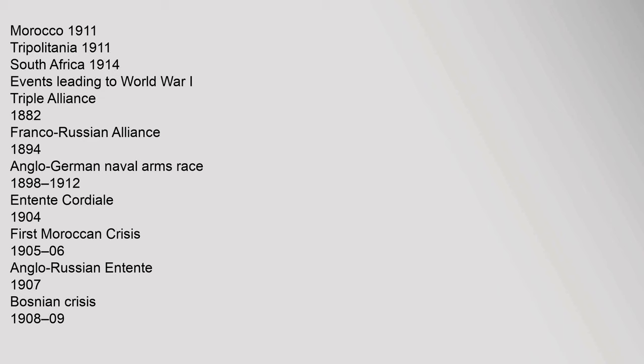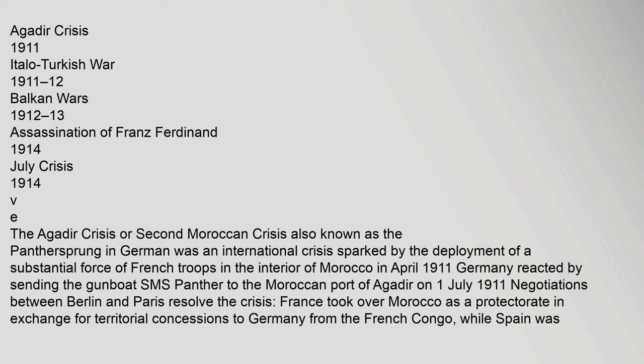Events leading to World War I: Morocco 1911, Tripolitania 1911, South Africa 1914. Triple Alliance 1882, Franco-Russian Alliance 1894, Anglo-German naval arms race 1898–1912, Entente Cordiale 1904, First Moroccan Crisis 1905–06, Anglo-Russian Entente 1907, Bosnian Crisis 1908–09, Agadir Crisis 1911, Italo-Turkish War 1911–12, Balkan Wars 1912–13, Assassination of Franz Ferdinand 1914, July Crisis 1914.